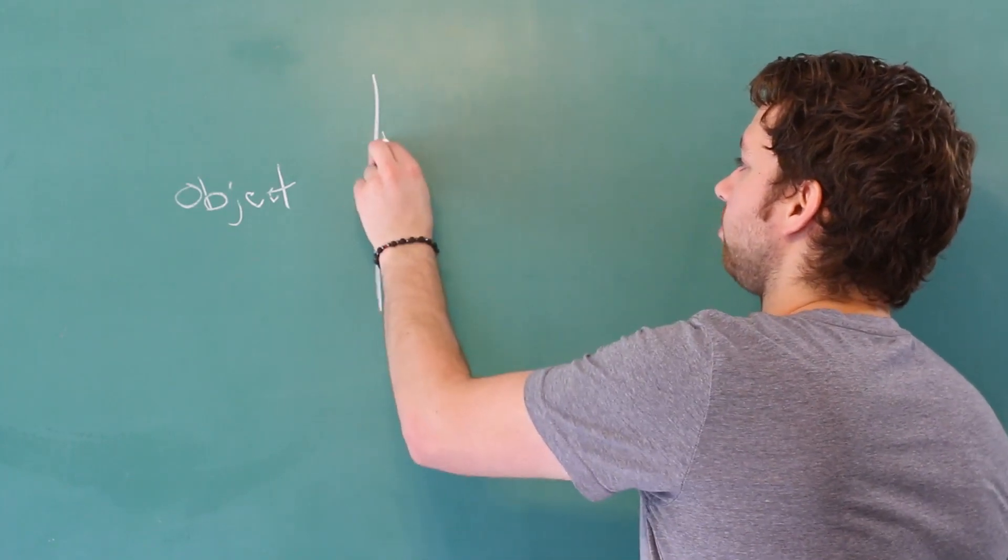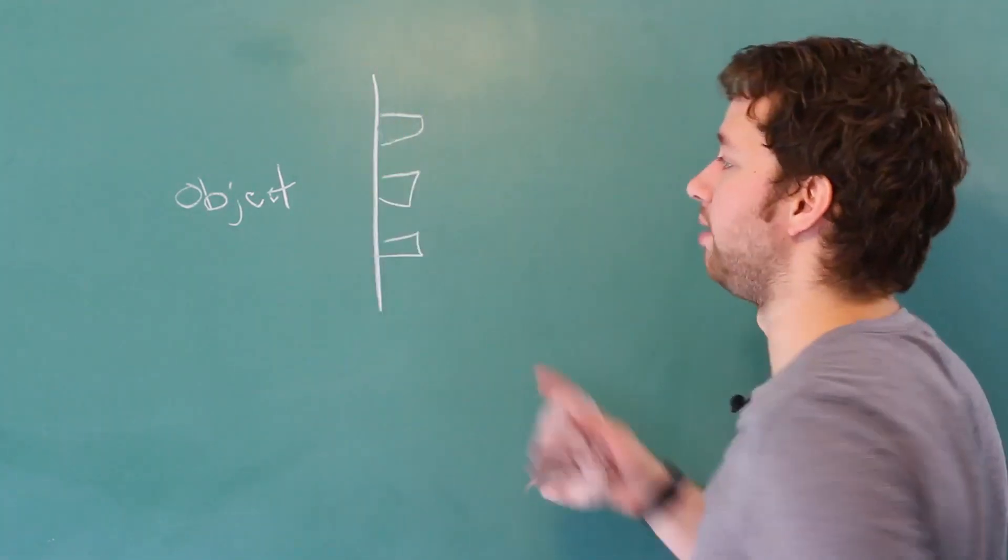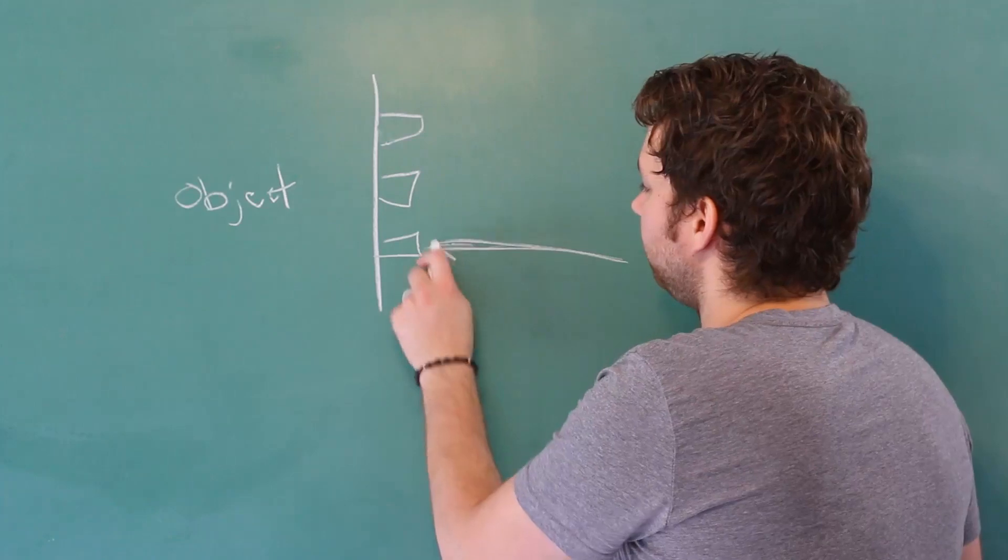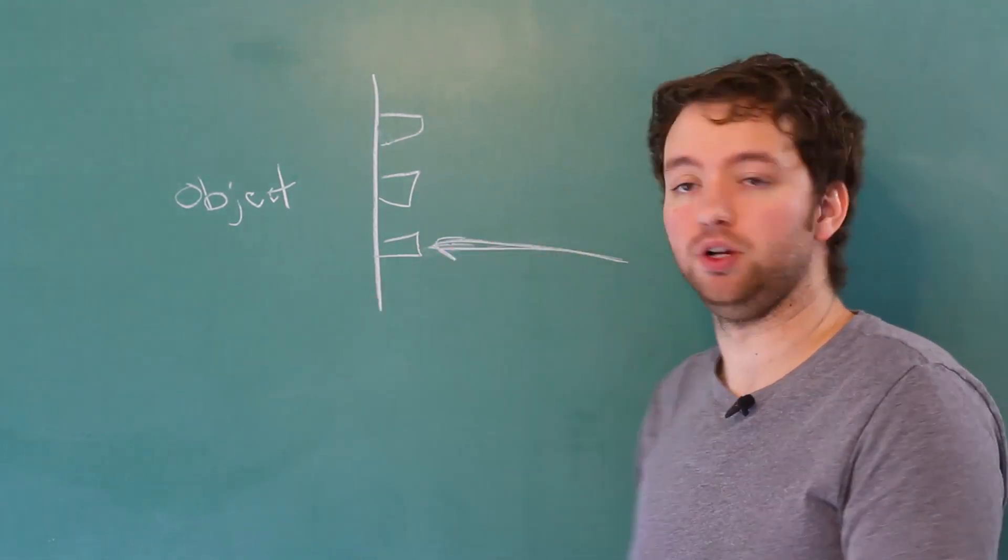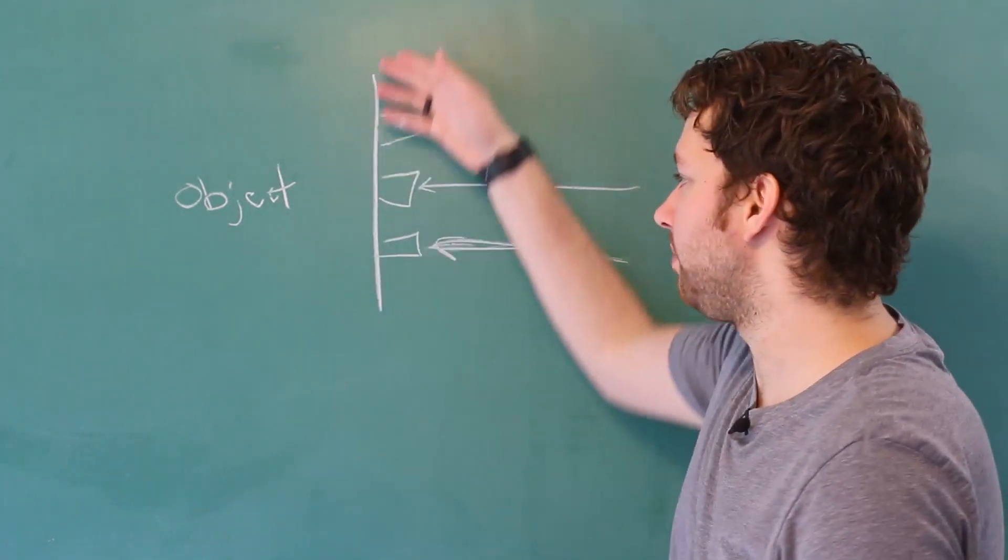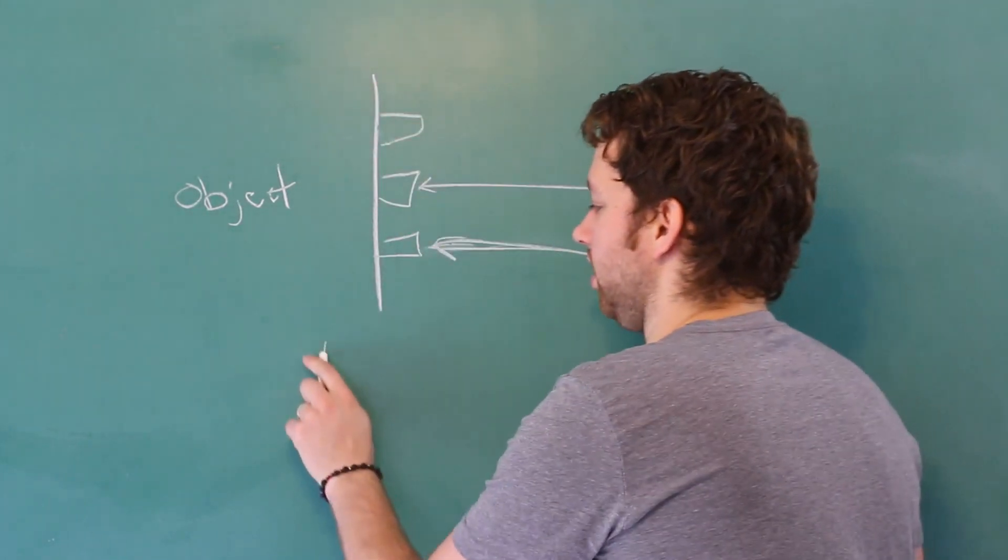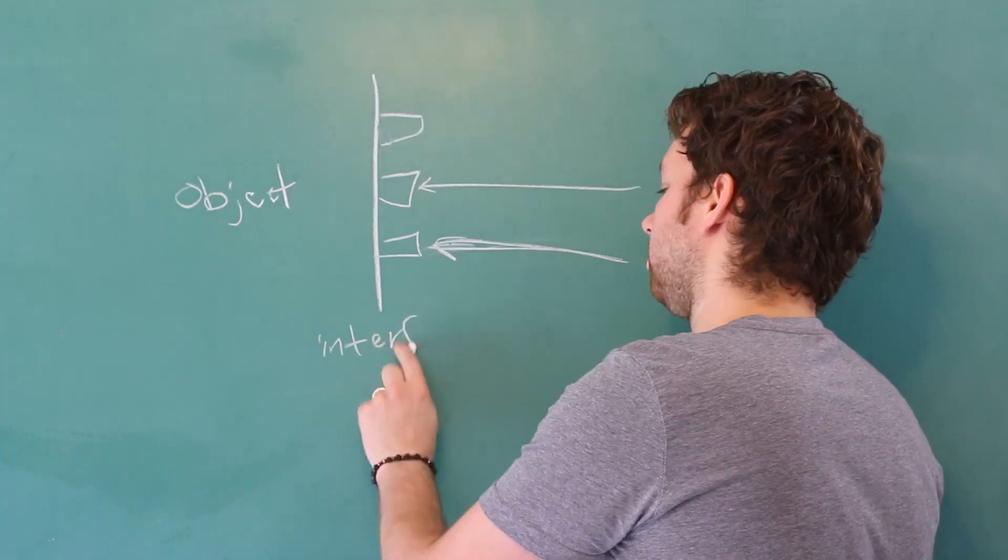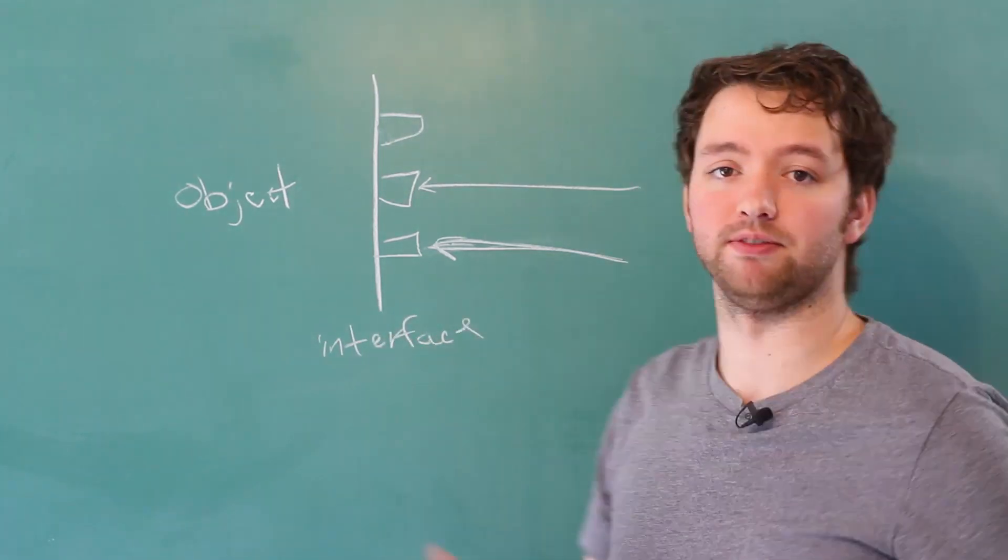And this wall is the interface on how we interact with this object. And it has certain characteristics that describe how this object is usable. So maybe we can have the object give us some output, or we can tell the object to do something with a particular value. We can basically work with this object through this interface here.